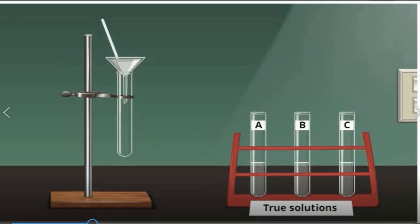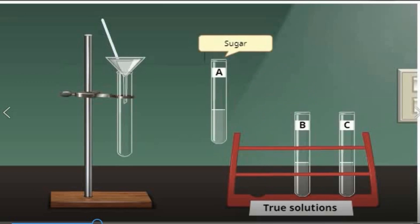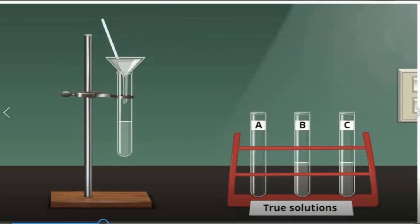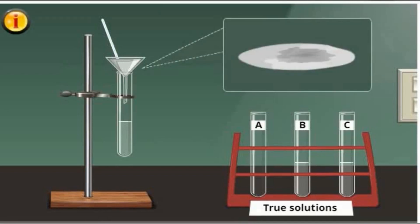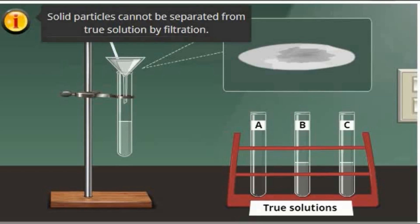Let us try to find out if the components of the different true solutions are filterable. The residue is what we collect at the filter paper while the filtrate is what we collect at the test tube. From mixture A, we were able to retrieve a clear filtrate and no residues were collected. The same goes with mixture B and mixture C. This only shows that solid particles cannot be separated from true solution by filtration.